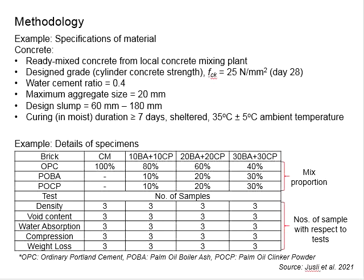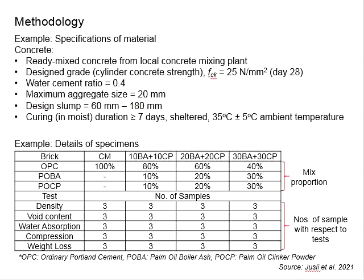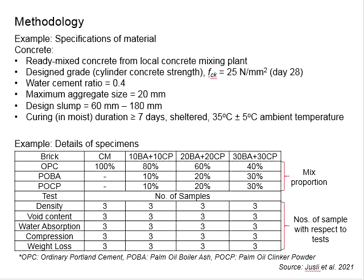If you have any additive, such as super plasticizer, you need to provide the relevant details and specifications. There will be a maximum size of aggregate, which is typically 20 mm, and you need to specify the design slump. You also need to specify the curing methods for your test specimens as well as your cylinders for acquiring the concrete strength — in this case, curing is done in moist conditions for a duration of at least seven days under sheltered conditions, with ambient temperatures of plus or minus five percent of 35 degrees Celsius.